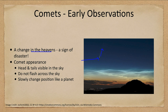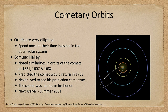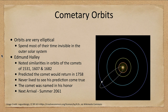When we look at the orbits of comets we find that they're different than the orbits of the planets. They are elliptical, and because of that they follow Kepler's second law, which means that they come in close to the sun and spend most of their time far away from the sun.